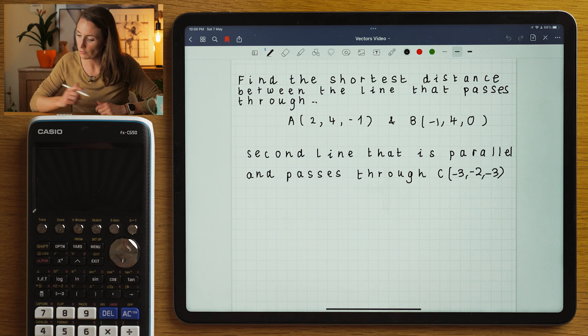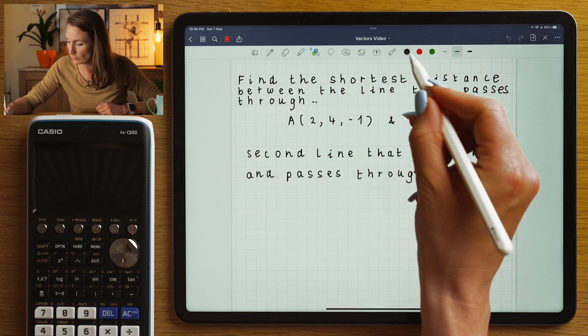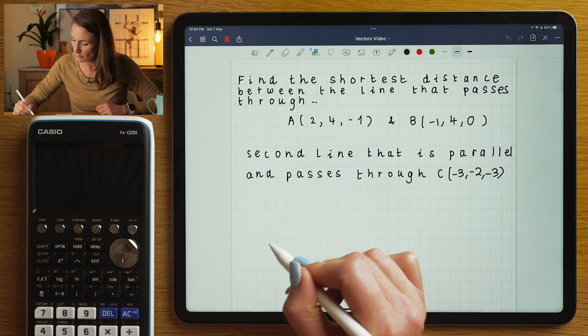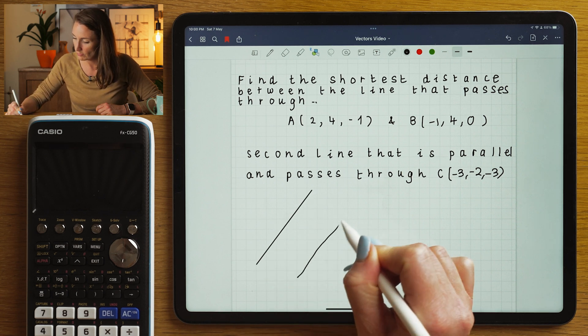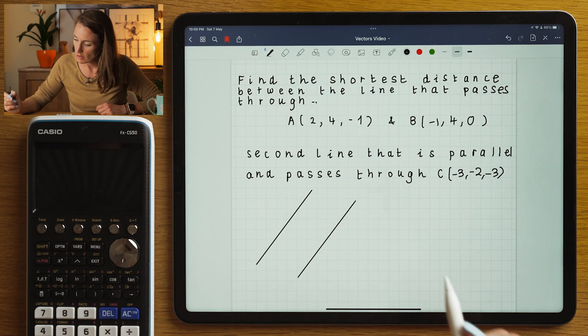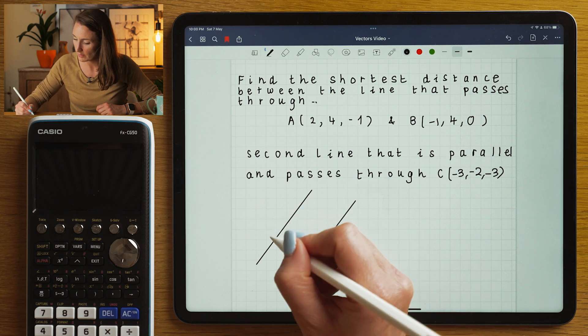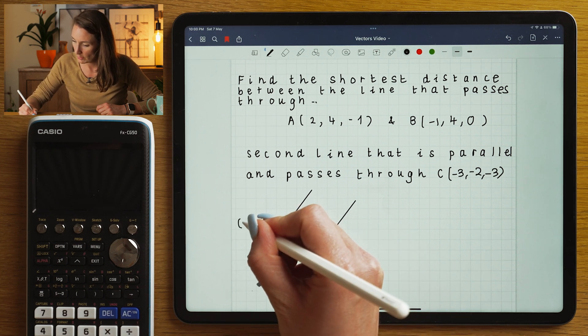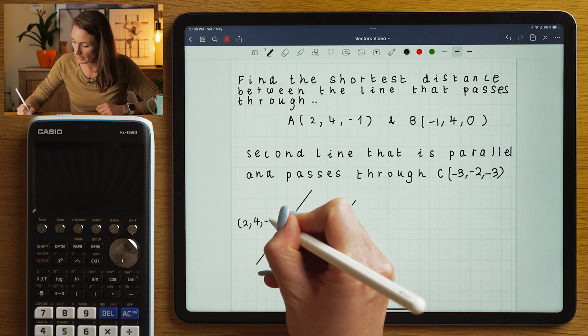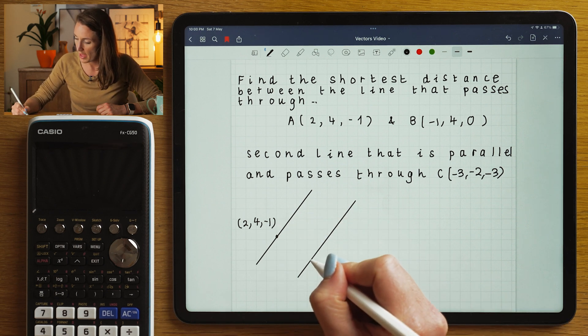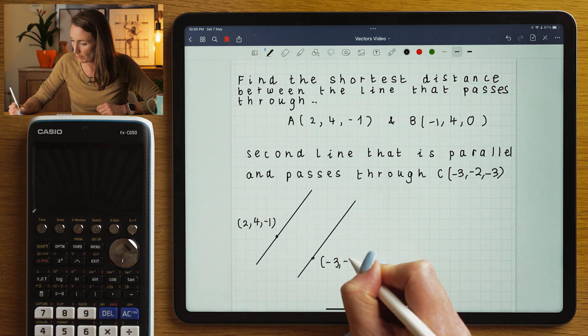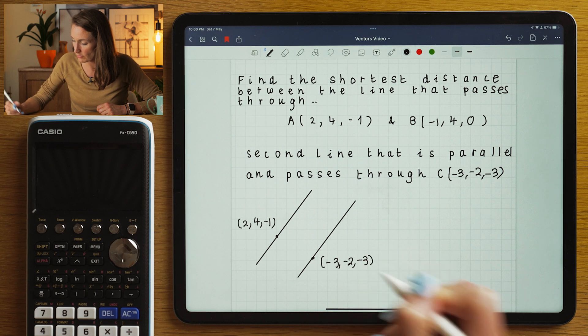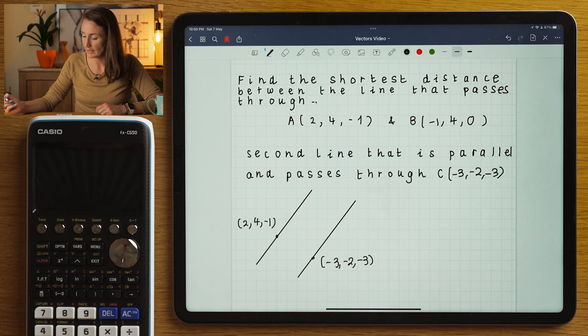So here's the question. We've got two lines. I'm now going to draw a 2D representation of what we already saw before. We've got two lines in three dimensional space. We know that (2,4,-1) is a point on this one. And that (-3,-2,-3) is a point on this line here.